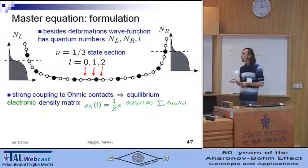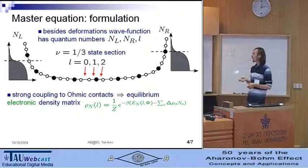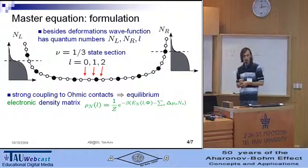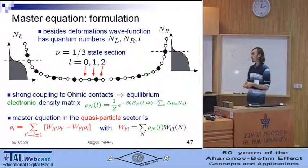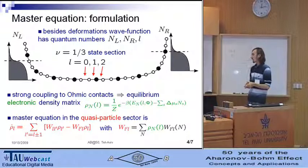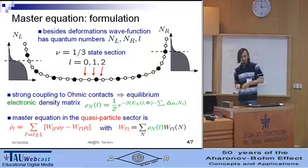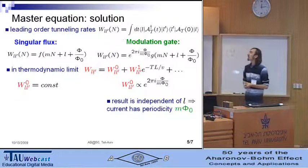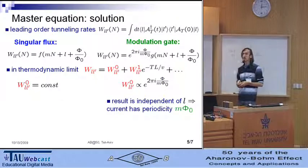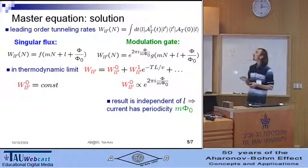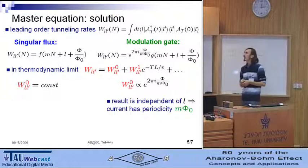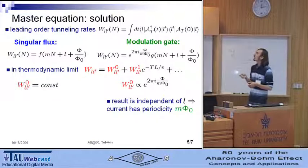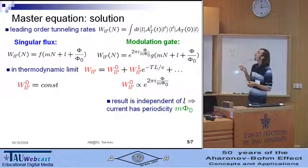After the summation over the electronic number, we come to the master equation in the quasiparticle sector with the following tunneling rates. To solve the master equation and to find the quasiparticle current, one needs first to find these tunneling rates. For weak tunneling, this can be done in leading order with help of our effective theory.